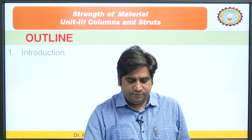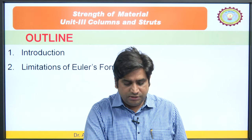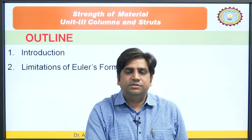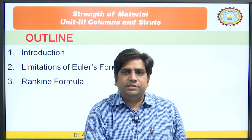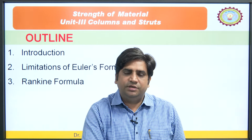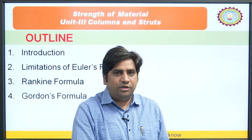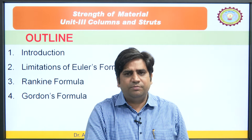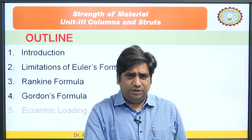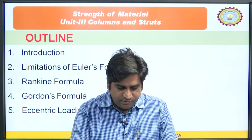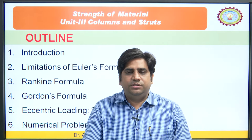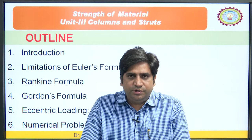These are the outlines of this particular lecture. We will discuss the different types of columns, then the limitations of Euler's formula — because it has certain limitations or disadvantages, and we will discuss under which conditions we cannot apply Euler's formula. Then we will discuss the Rankine formula — what Rankine proposed, what recommendations he gave, and what modifications he made. Thereafter we will see cases of eccentric loading, where the secant formula was derived, and then we will discuss a small numerical problem to understand the basics.